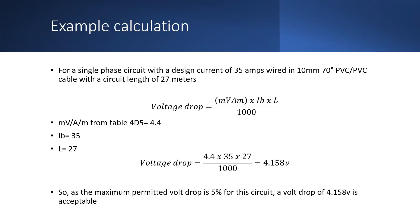So here we have an example calculation for a single phase circuit with a design current of 35 amps wired in 10mm 70 degree PVC-PVC cable with a circuit length of 27 meters. So the value for millivolts per ampere per meter is taken in this instance from table 4D5 and that is 4.4.